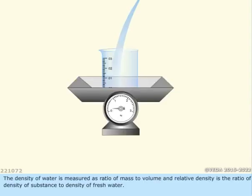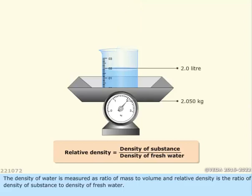The density of water is measured as the ratio of mass to volume, and relative density is the ratio of density of a substance to density of fresh water.